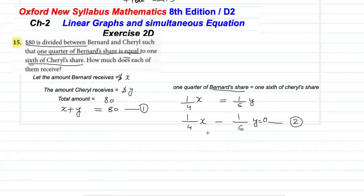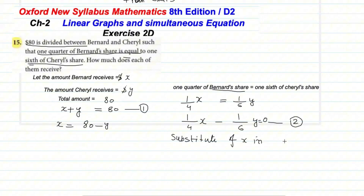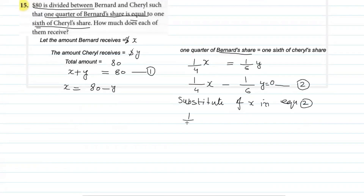We have two methods to solve simultaneously: one is the substitution method and one is the elimination method. We will solve it using the substitution method. From equation one, x equals 80 minus y. We substitute this value of x into equation two.